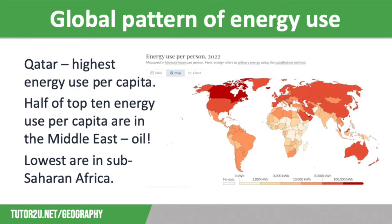Also in the top 10 per capita energy users are Iceland, Canada and Norway. Their huge amounts of energy are used to heat homes because of the cold weather. However, they are less reliant on fossil fuels. In Iceland, about 70% of energy is from hydroelectric power and almost 30% is from geothermal. In Canada, 61% is from hydroelectric power, 13% from nuclear, and 10.5% from natural gas. And in Norway, 88% is from hydroelectric, with another 10% from wind.